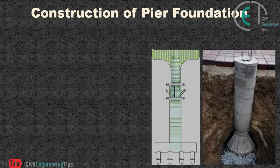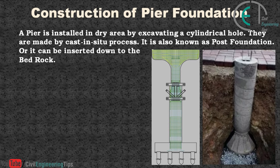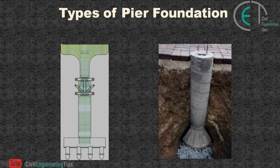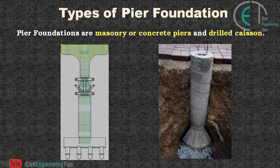Now let's talk about the construction of pier foundation. A pier is installed in a dry area by excavating a cylindrical hole. They are made by cast-in-situ process. It is also known as post foundation, or it can be inserted down to the bedrock. Pier foundations are of two types: masonry or concrete piers, and drilled caissons.